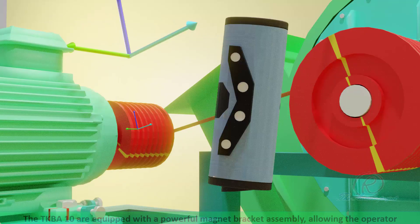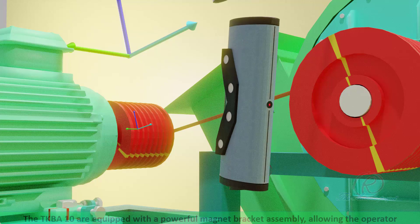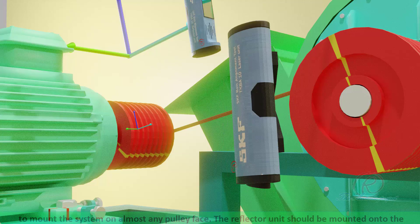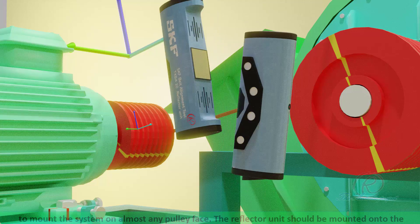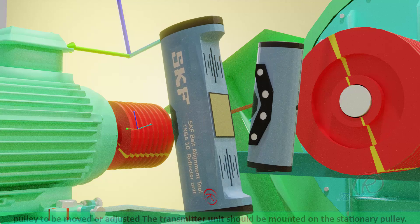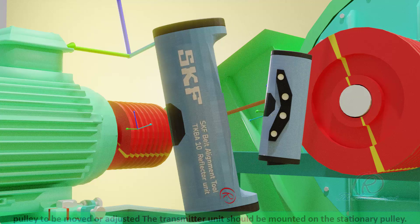The TKGB E10 are equipped with a powerful magnet bracket assembly, allowing the operator to mount the system on almost any pulley surface. The reflector unit should be mounted on the pulley to be moved or adjusted. The transmitter unit should be mounted on the stationary pulley.